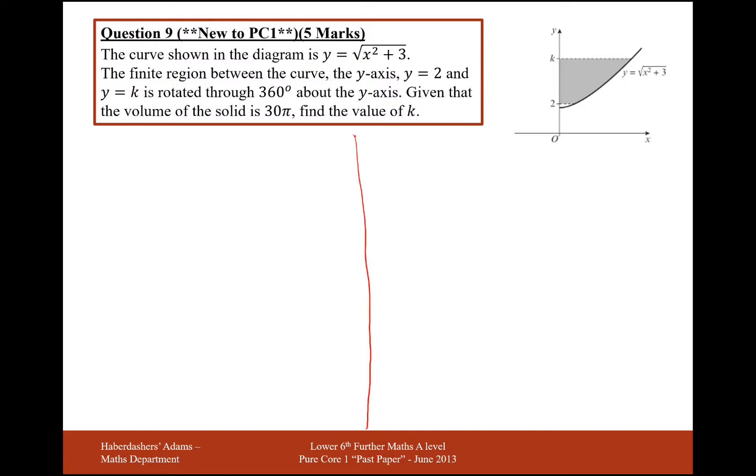Okay, so what we're going to look at here is finding the 360 revolution, so a volume of the area here. It's bounded by the curve y equals square root of x squared plus three, the line y equals k, y equals two, and the y-axis.